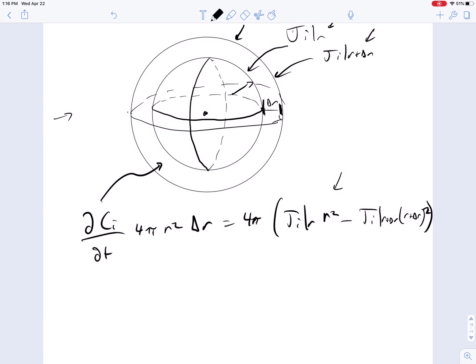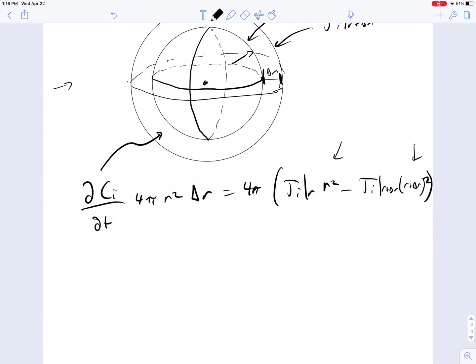And then lastly, for the body reactions, or the reactions taking place in the volume, we have reactions in this volume, 4 pi r squared delta r.